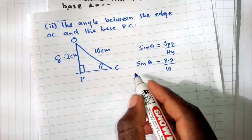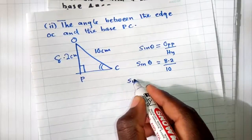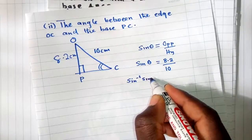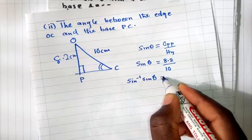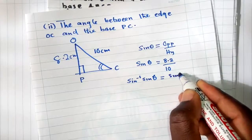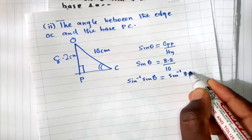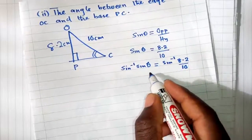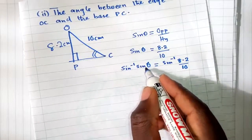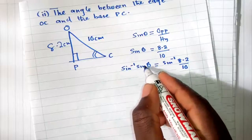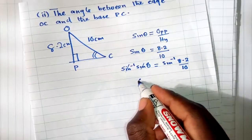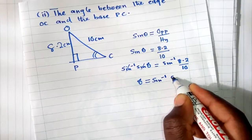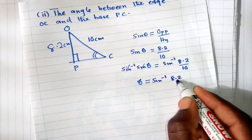Next thing we'll multiply both sides by sine inverse. So this sine and this sine will disappear and we remain with theta, which is equal to sine inverse of 8.2 over 10.